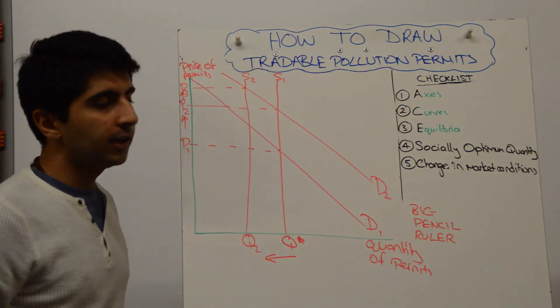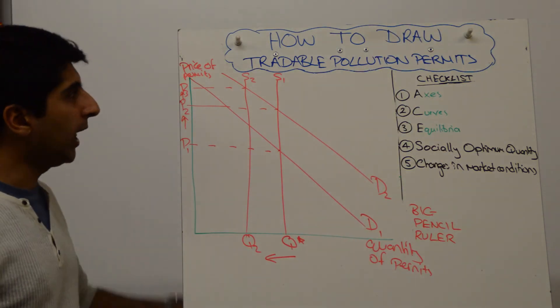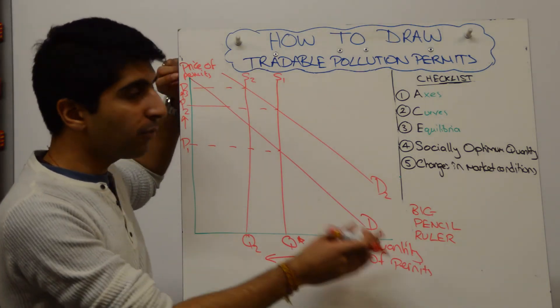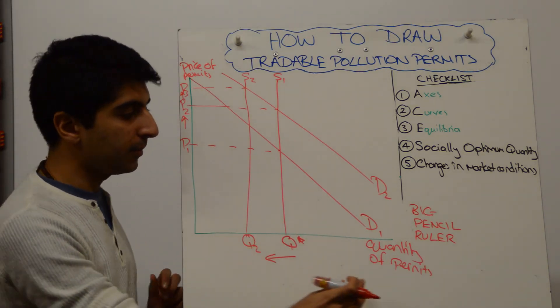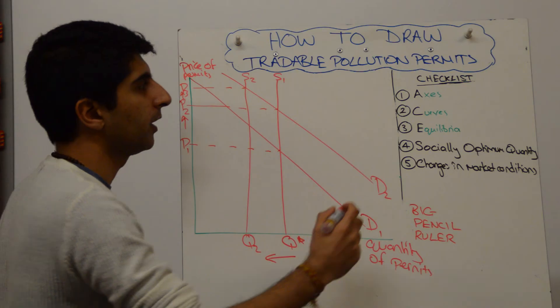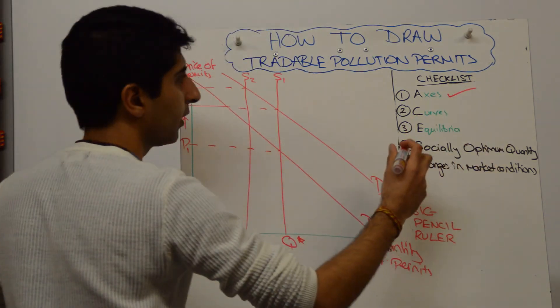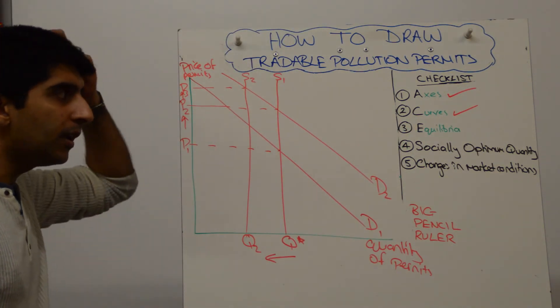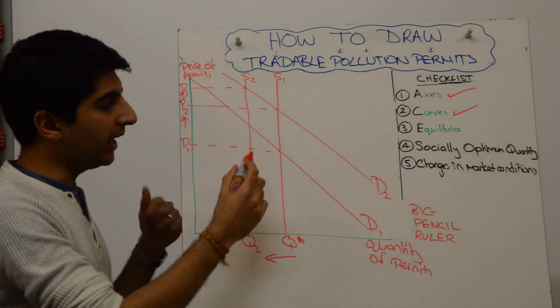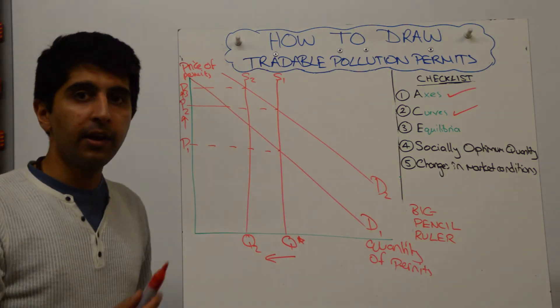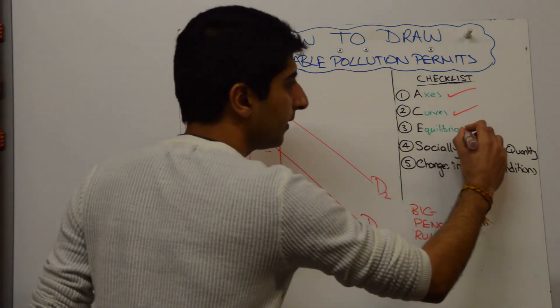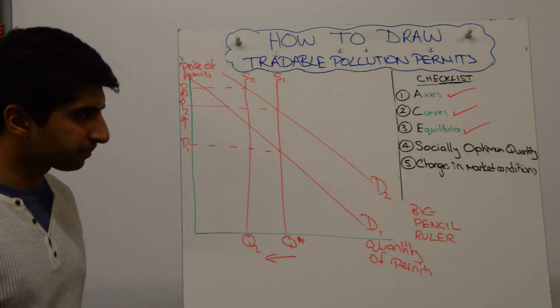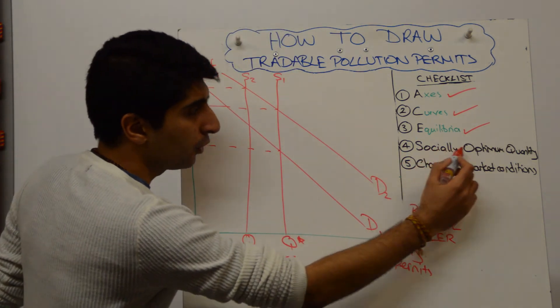And if we go back to our checklist, let's just make sure the basics are there. Have we labelled our axes? Yes, we have, and we've applied them to show the examiner that we're in the market for permits here. So that's nicely done. We've labelled our curves, our supply and demand curves are labelled. Have we labelled our equilibria? Yes, we have. All the various equilibria have been labelled correctly here. That's very important here.